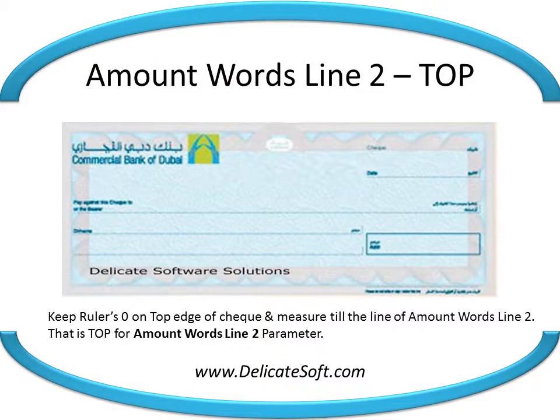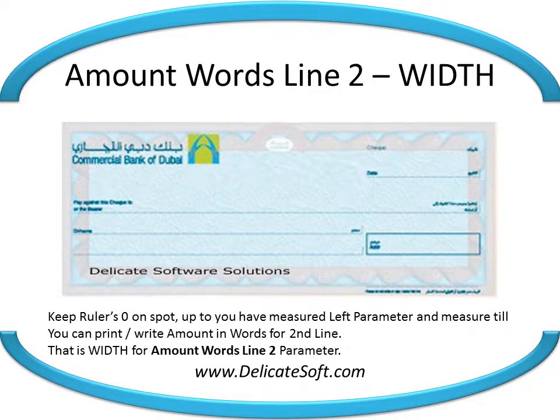Keep the ruler's zero on the top edge of the check and measure till the line of amount words line 2 — that is the top for amount words line 2 parameter. Then keep the ruler's zero on the spot up to where you measured the left parameter and measure till you can print the right amount in words for the second line — that is the width for amount words line 2 parameter.